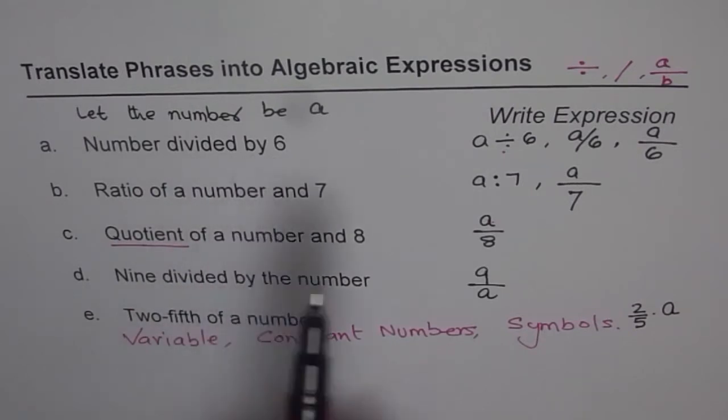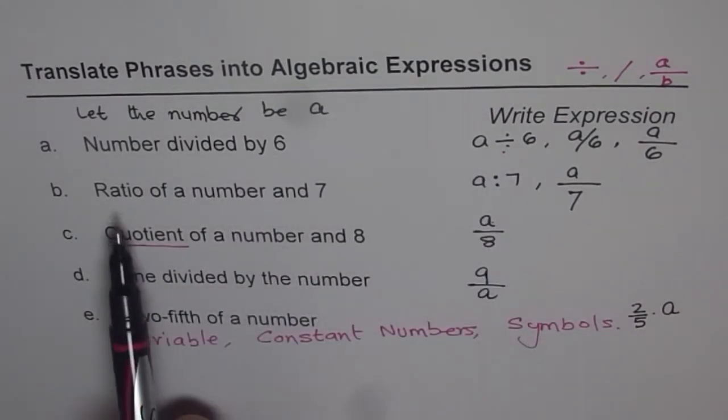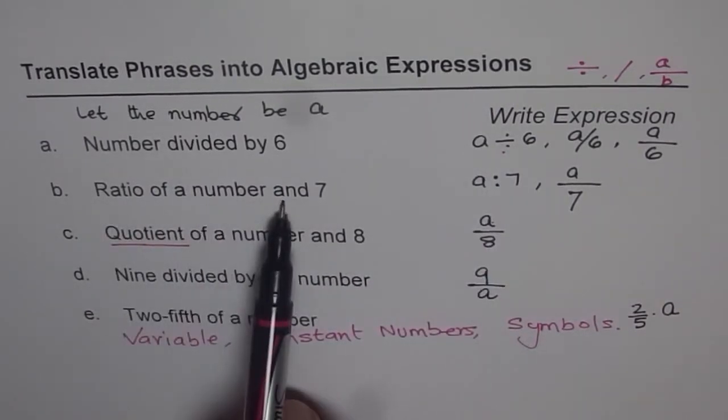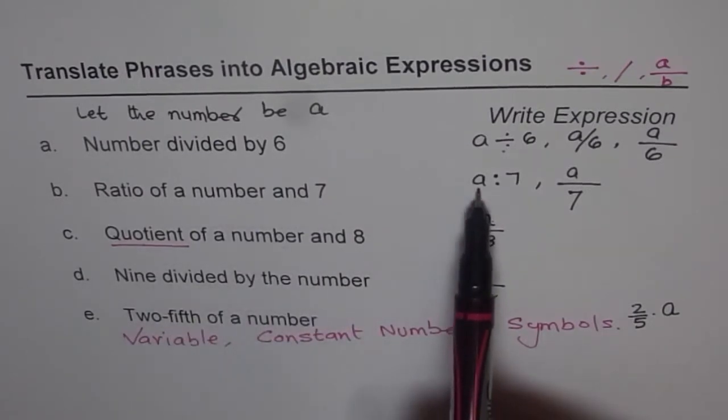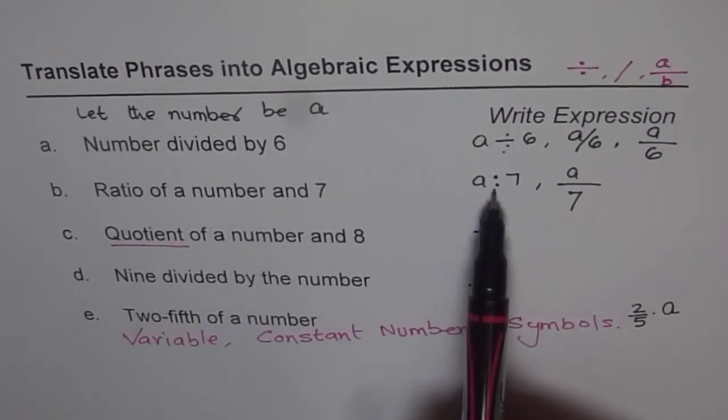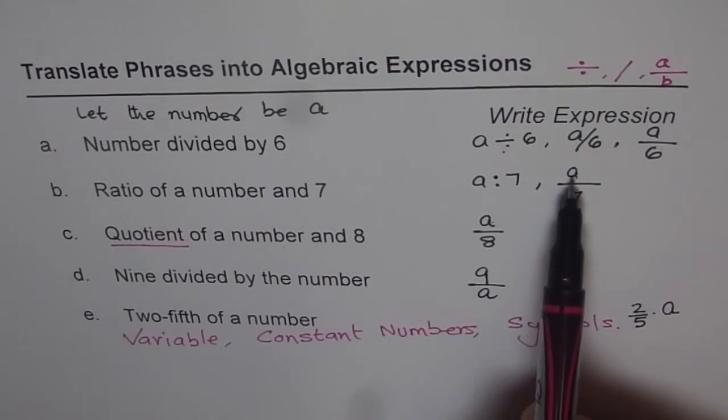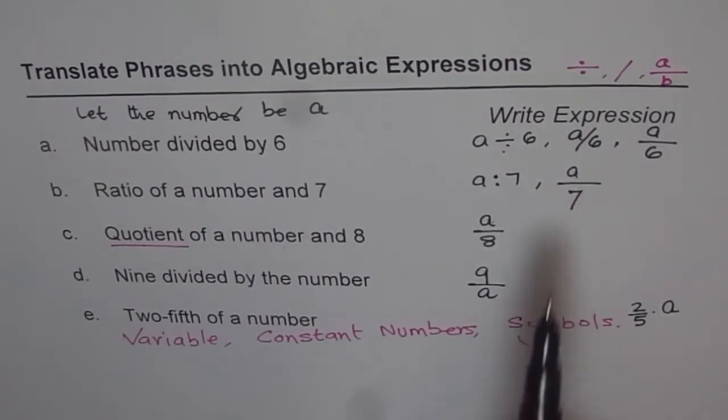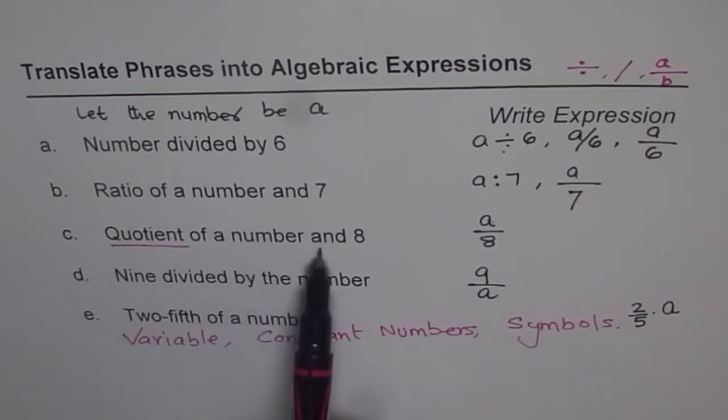So let's go through this once again. Number divided by 6, a divided by 6. Clear. Ratio of number and 7. So number comes first. Number ratio 7, number division 7. Quotient of number and 8. So quotient is the numerator, a divided by 8.